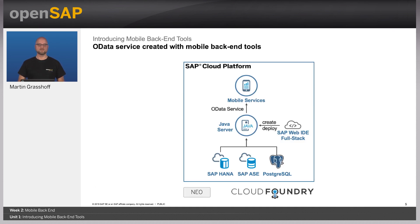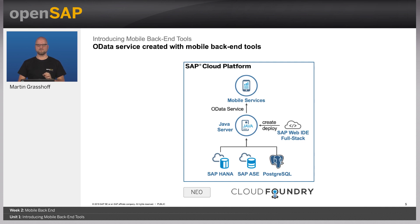From an architecture perspective, you see mobile services connecting to your backend — in this case, a generated Java service from the mobile backend tools. The Java service connects to one of the supported databases or to the in-memory database, retrieves data, converts it to OData, and gives it back to mobile services, where it can be consumed by mobile devices. The Java service can be generated for either the Neo environment or the Cloud Foundry environment of SAP Cloud Platform. Once deployed — which you can do directly from within the Web IDE — it's a regular Java application handled like any other.